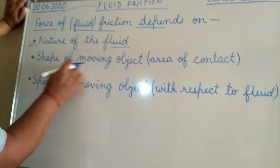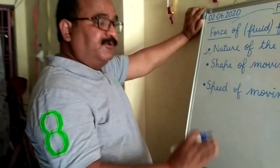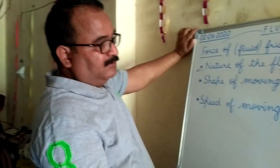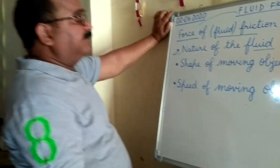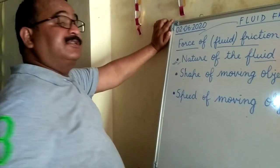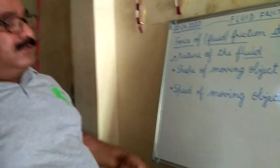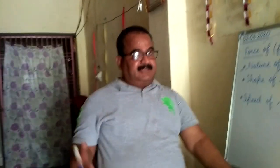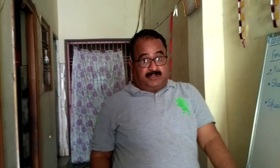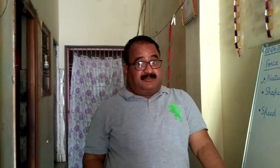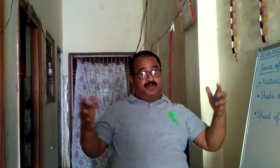The second factor is the shape of the moving body. A body that moves in air or water — the shape matters. Take the shape of a boat: both sides of the boat are very sharp rather than the middle side.